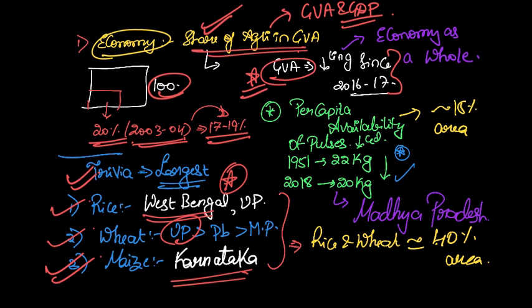Generally, when we are talking about agriculture, the per capita availability of almost all the food crops increased since 1951 or after independence. If there is one crop where we are facing a shortage, then that is pulses. Even though the availability as a whole increased, it is still not sufficient for the growing population. Because in 1951, 22 kgs is the per capita availability of pulses, and in 2018 it is 20 kgs. The largest producer of pulses is Madhya Pradesh.